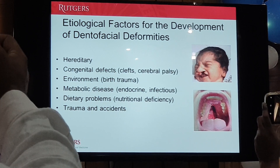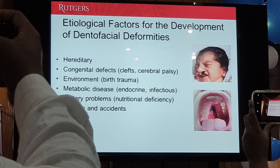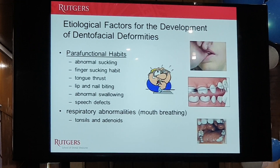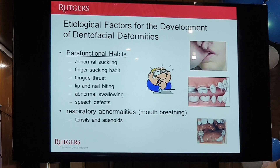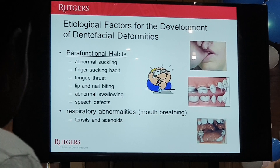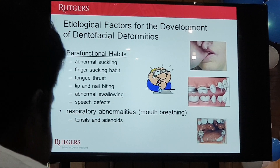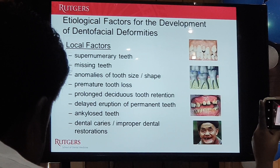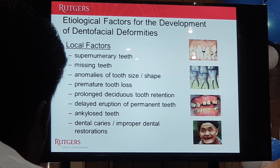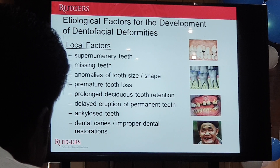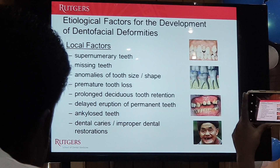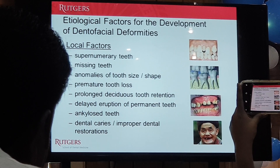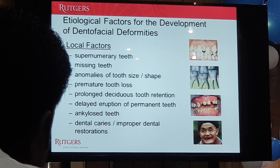It's oftentimes how you were born, for no good reason, that you've developed that. Sometimes you can develop deformities, especially anterior open bites, from parafunctional habits like thumb sucking or tongue thrust. There are other local reasons to have dental facial deformities — some may be due to premature loss of primary dentition, lack of eruption of adult teeth, or missing teeth.